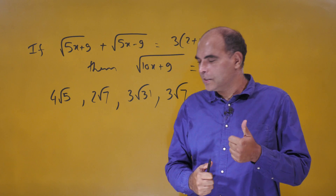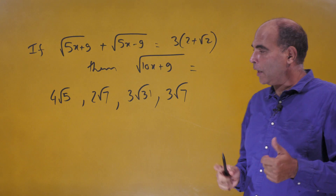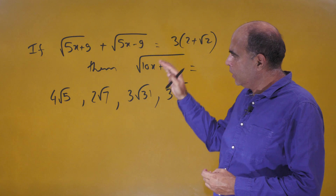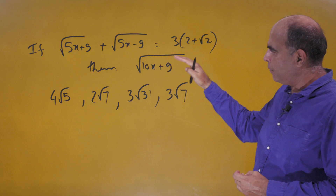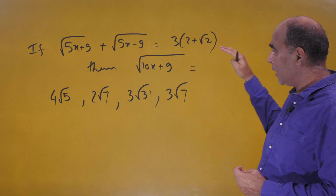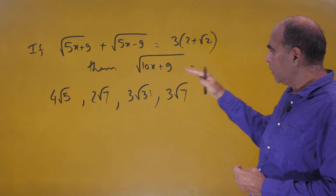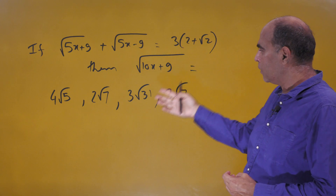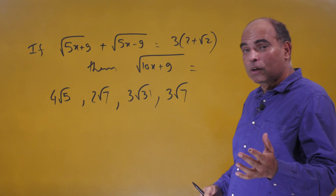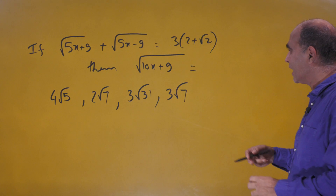Welcome back to the 60-second series — CAT question solved in 60 seconds, CAT 2023 Slot 1. If √(5x+9) + √(5x−9) = 3(2+√2), what is the value of x? There are 4 options. The first thing you notice is that the right-hand side simplifies to 6 + 2√2.